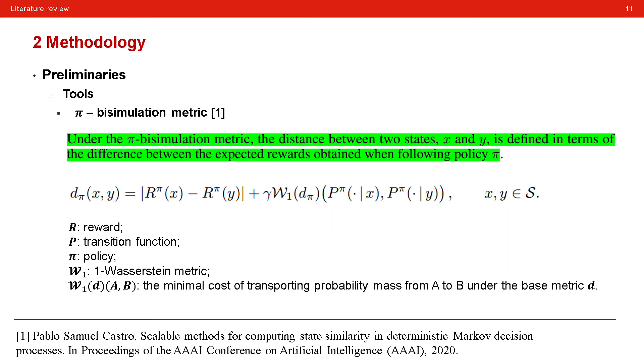The first tool related to this study is called π-bisimulation metric. This metric evaluates the similarity of two states. The distance between two states x and y is defined in terms of the difference between the expected rewards obtained when following policy. Specifically, the absolute difference of the reward function in the two given states are used. And they also include one Wasserstein metric to calculate the minimal cost of transporting probability metrics from A to B under the base metric D.